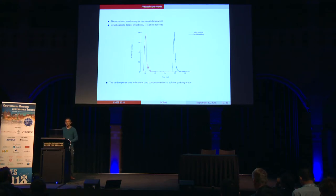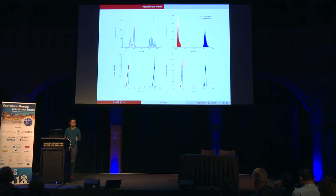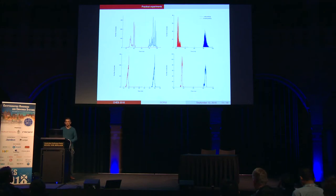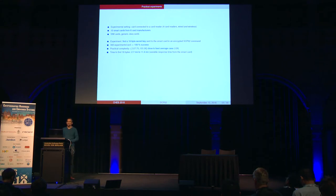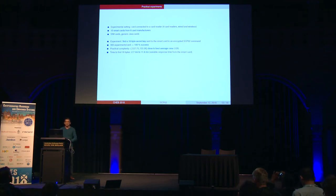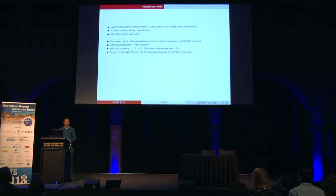This observation has been made on several cards that we have tested. The response times may be different depending on the card, but in all cases we have been able to clearly distinguish between the case when the padding is incorrect and when it is correct after decryption. More precisely, we used an experimental setting where we simulated the server and tested 10 models of smart cards provided by different manufacturers — either SIM cards or generic Java cards. The experiment was to randomly generate 16 bytes, send them through an encrypted SCP-02 command to the card, and have the attacker retrieve these 16 bytes using the padding oracle attack and the timing side channel. In all cases, we have been able to retrieve these 16 bytes, which could be a symmetric key, for instance.